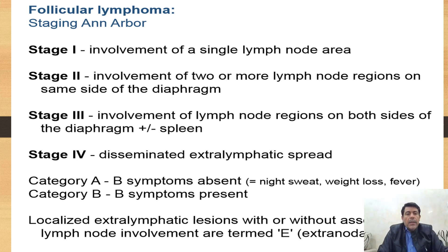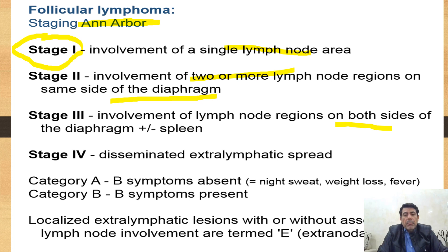The staging system used is called Ann Arbor staging. Stage one is a single lymph node or single area, same as in Hodgkin lymphoma. Stage two is two or more lymph nodes on the same side of the diaphragm. Stage three involves both sides of the diaphragm — upper and lower — and may include the spleen.